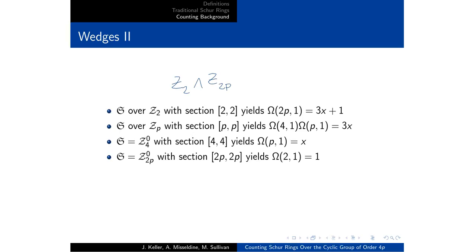Similarly, for S over ZP, you have this PP section, which will again give you omega 4,1, omega P,1. And that will give us the 3x, as we were talking about earlier.